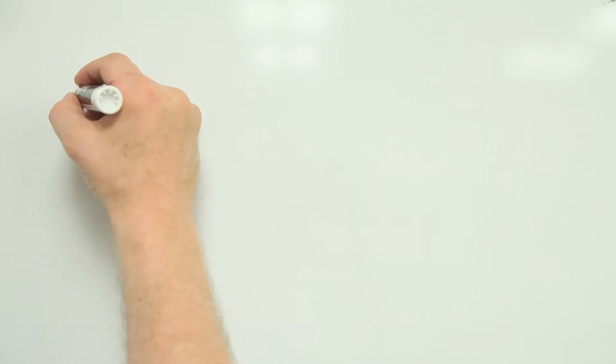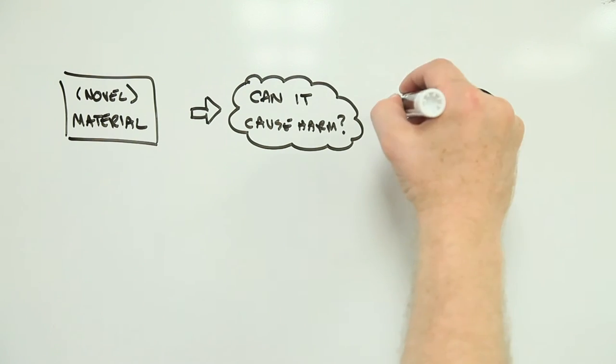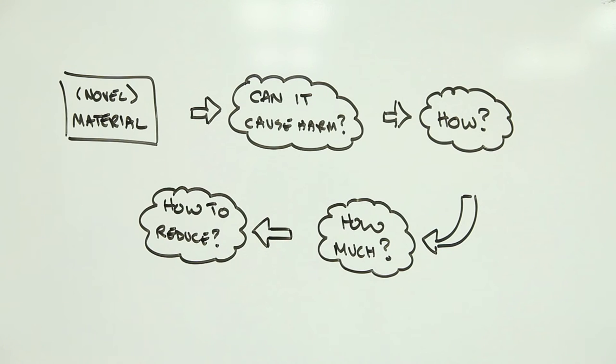From a human health perspective, we're interested in risk. What can cause harm? How does it do it? How much harm could potentially be caused? And how can we reduce or avoid this?